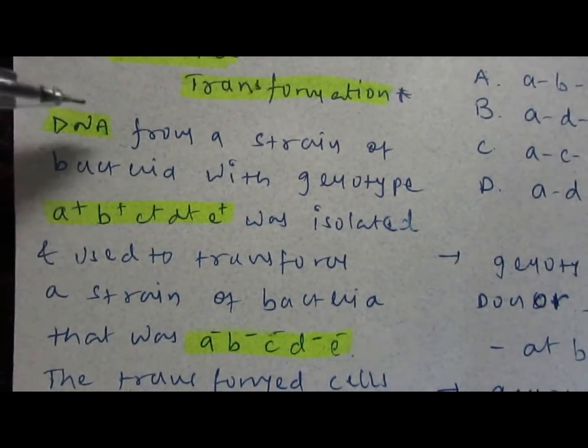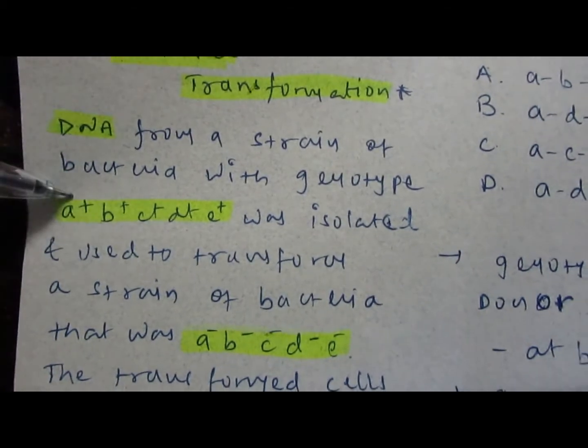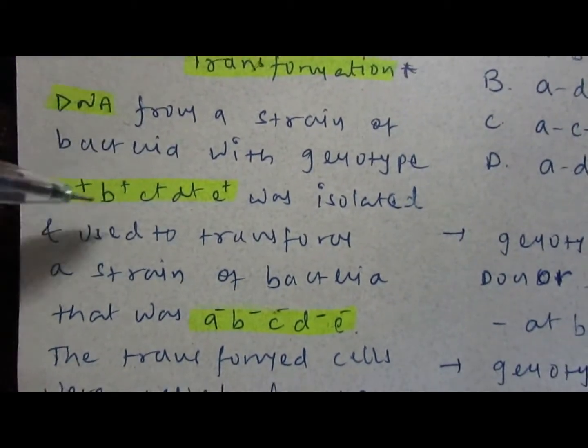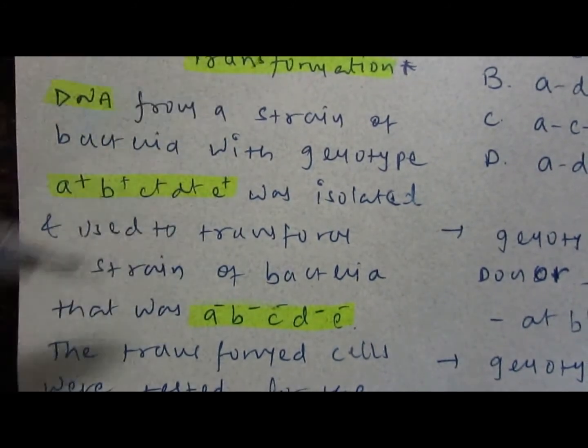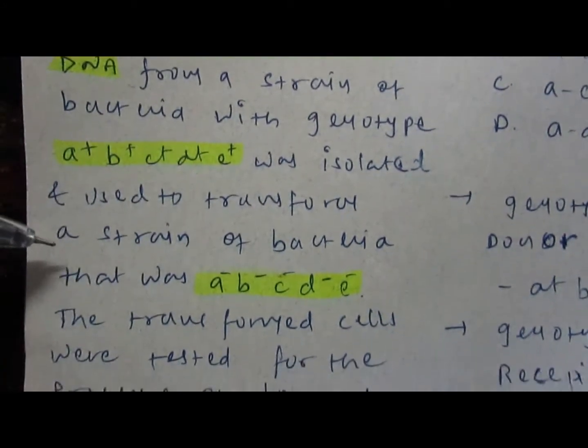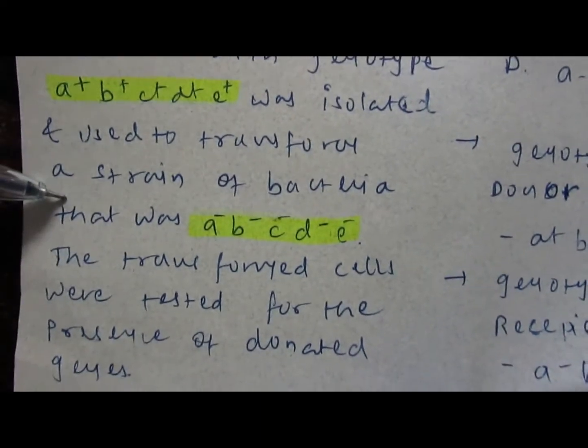So here is the problem. DNA from a strain of bacteria having genotype a+ b+ c+ d+ e+ was isolated and used to transform a strain of bacteria that was a- b- c- d- e-.